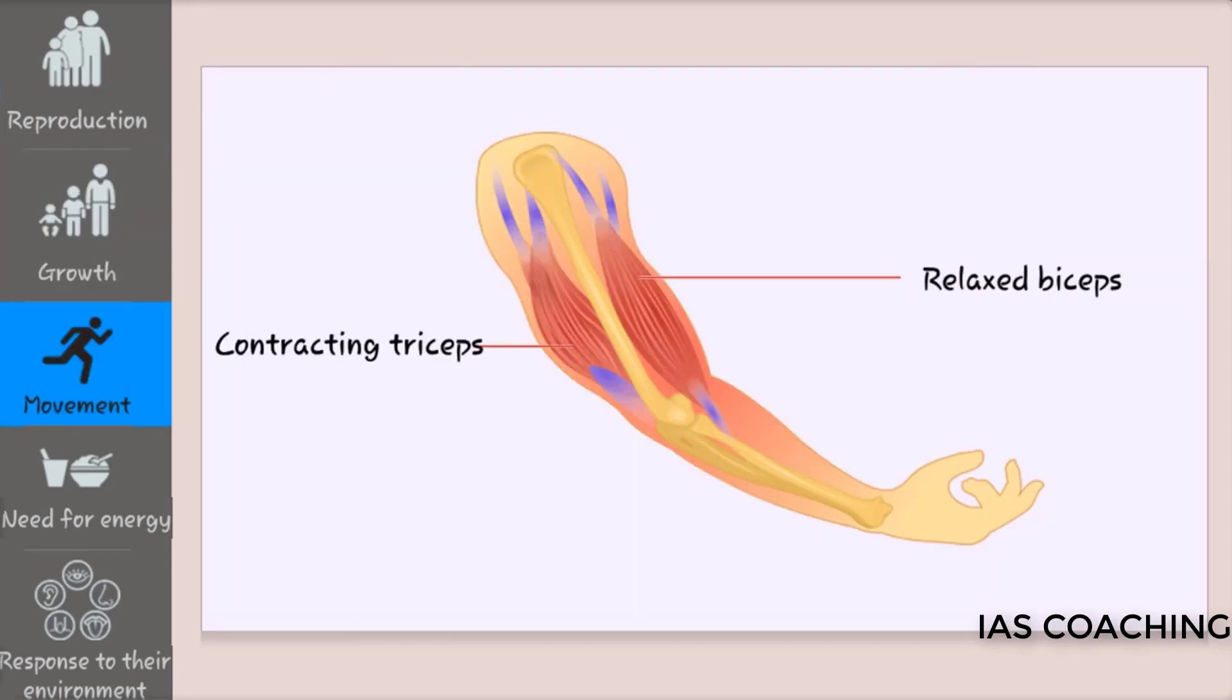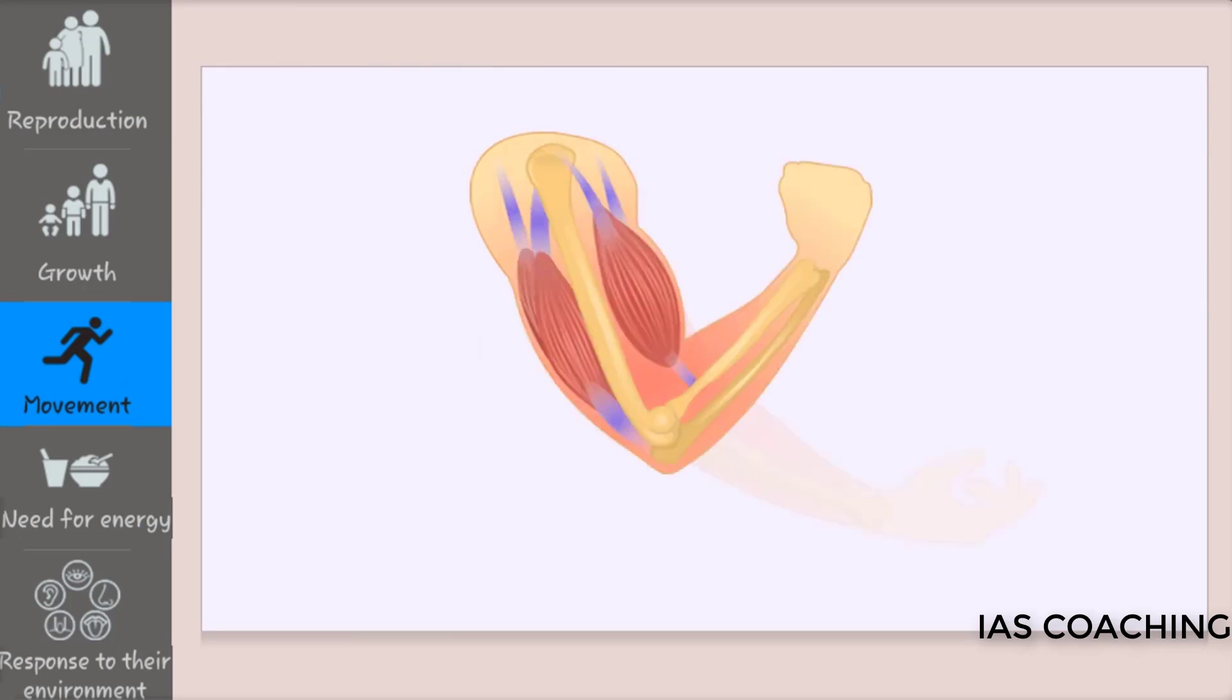Movement in a human body is controlled by the muscle cells. These cells contain protein contractile filaments that move past each other and change the size and shape of the cell.